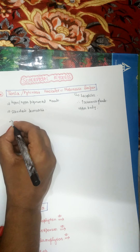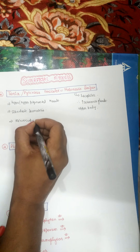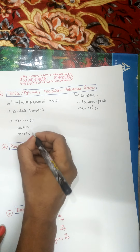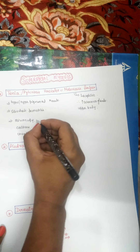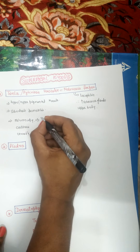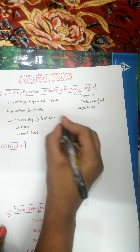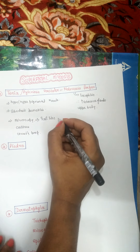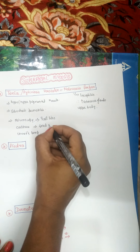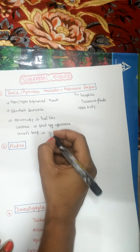We should know how tinea/Malassezia furfur appears in microscopy, culture, and Wood's lamp. In microscopy, Malassezia furfur is a yeast-like fungus — it is between spherical and hyphal forms. On culture, it gives a fried egg appearance.